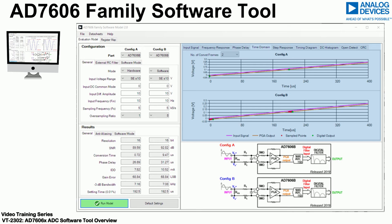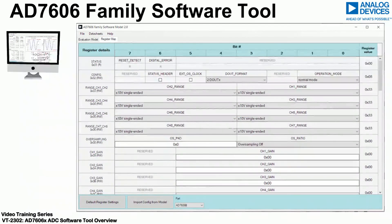The tool also includes a register map tab. This offers a quick and easy way to configure the AD7606B and the AD7606C devices, making it easier to move to the firmware development stage of the design.